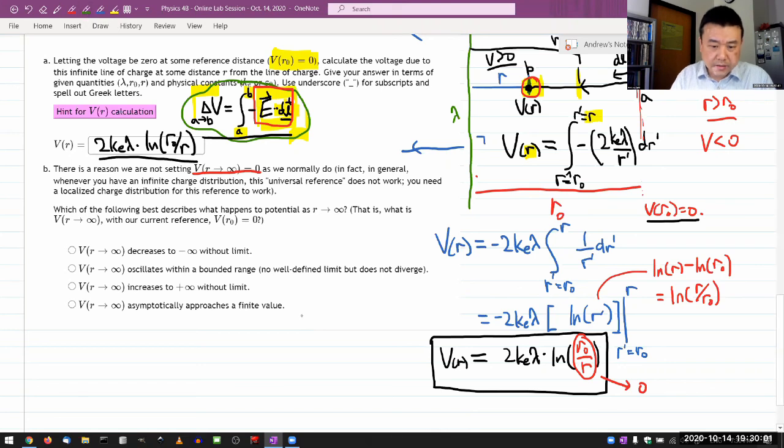And I hope that people have enough familiarity with natural log to know this, that limit as X goes to zero from positive of natural log of X, it's negative infinity. Natural log just continues to decrease without a bound. So V of R decreases to negative infinity without limit. That should be the answer.